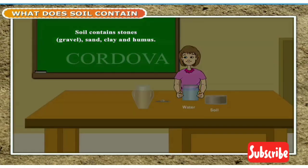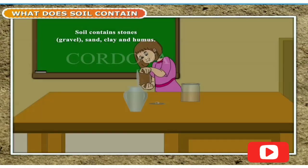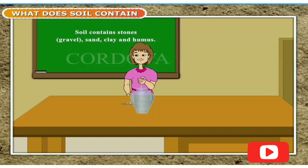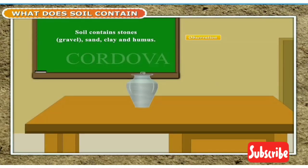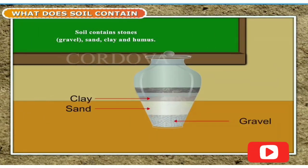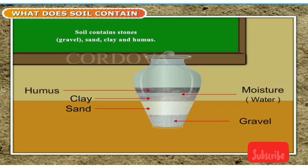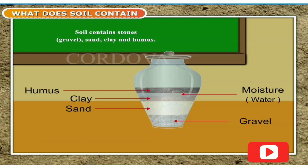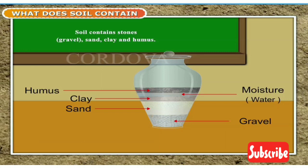Take some soil from a garden. Put the soil in a glass jar. Fill the jar with water. Cover it with a lid and shake it well. Leave it undisturbed. At the bottom of the jar we see a layer of gravel — it is the heaviest layer. Above the layer of gravel we find a layer of sand. Above the sand we find clay. The water above the layer of clay is not clear. Dead leaves, twigs and parts of dead insects float on the water. This is called humus. It makes the soil fertile.